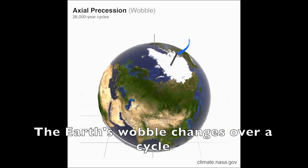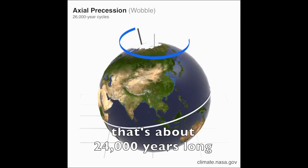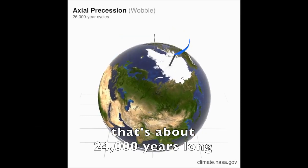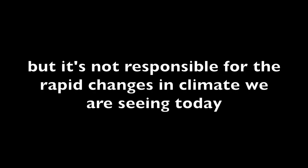The Earth's wobble changes over a cycle that's about 24,000 years long, so it can affect climate in the long term, but it's not responsible for the rapid changes in climate we are seeing today.